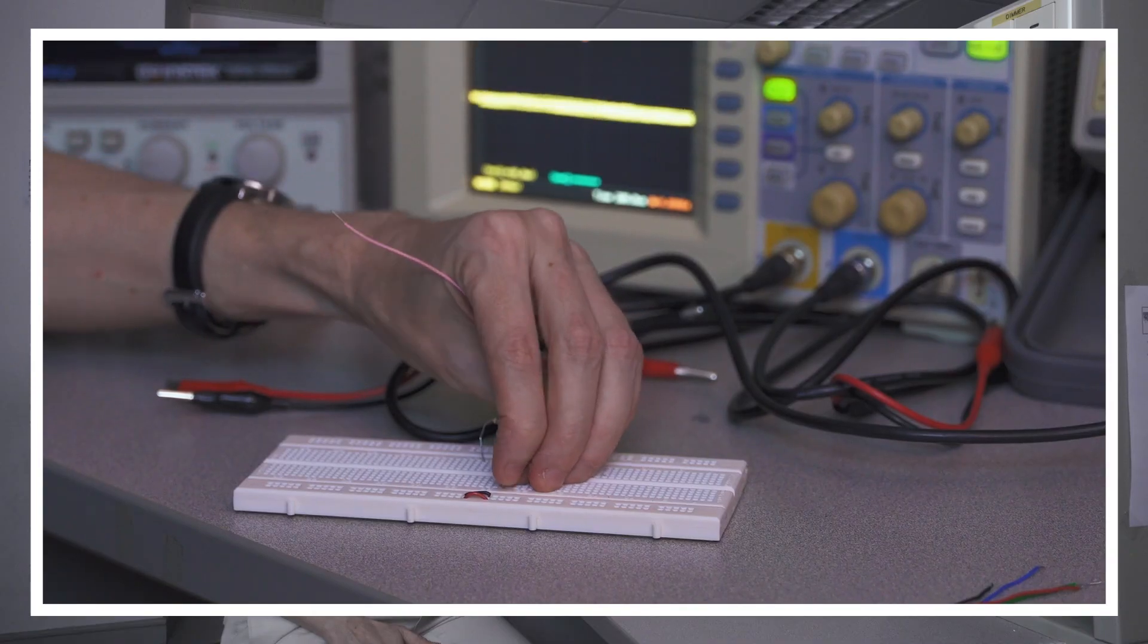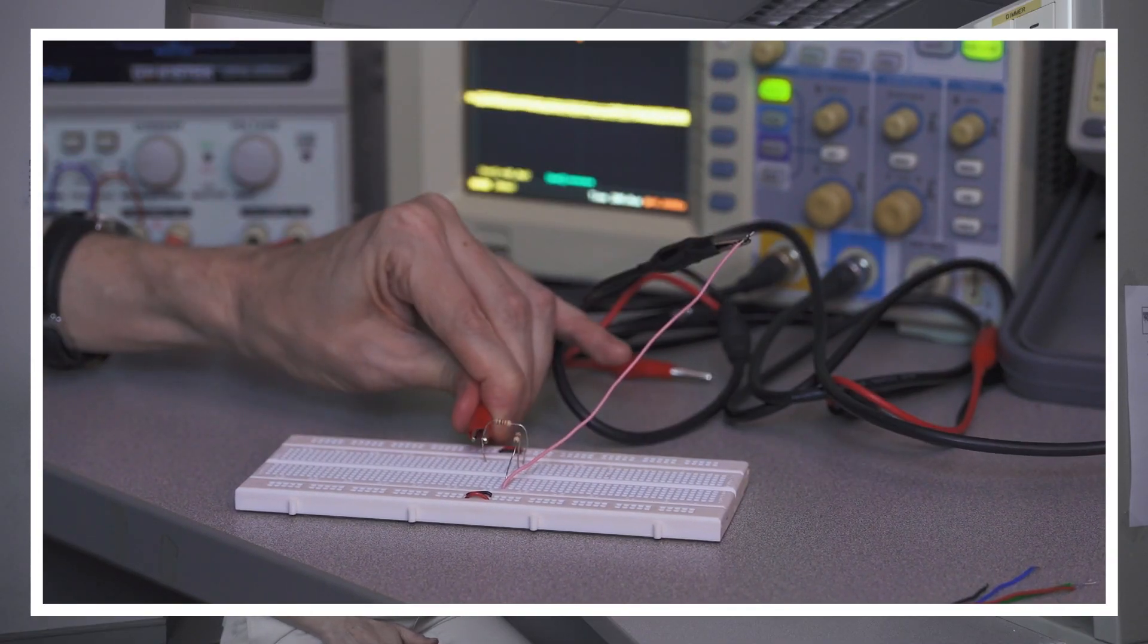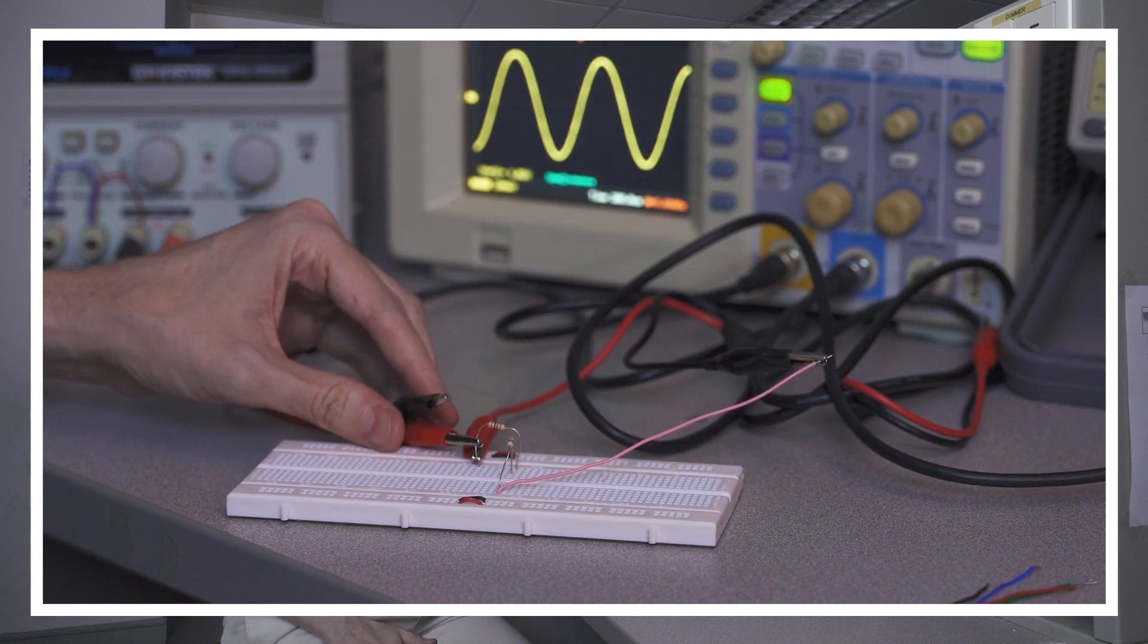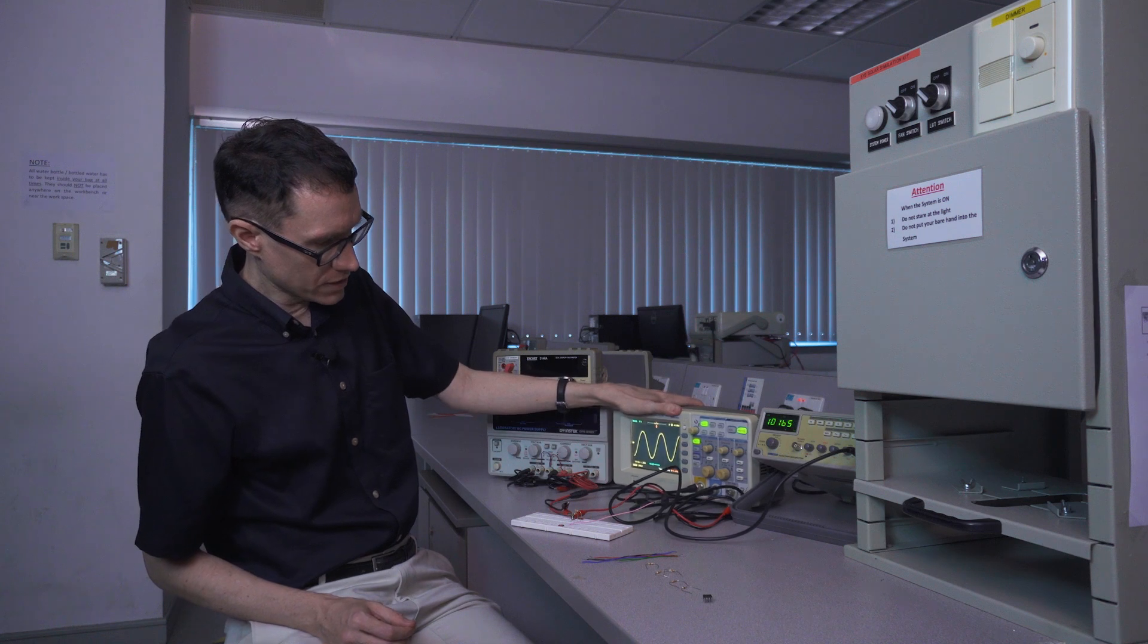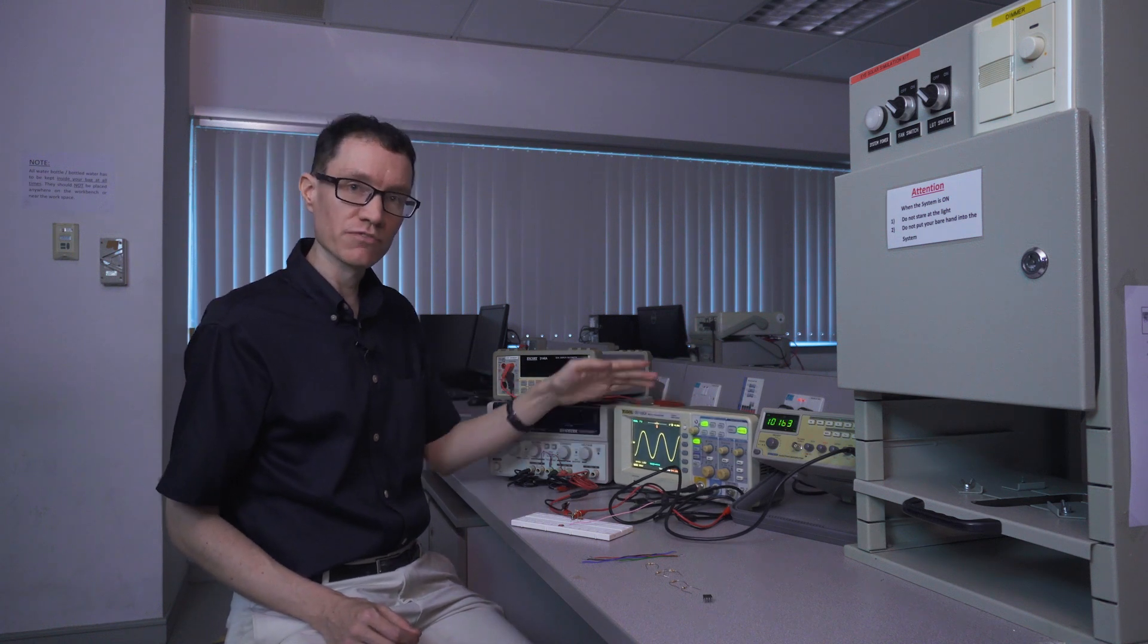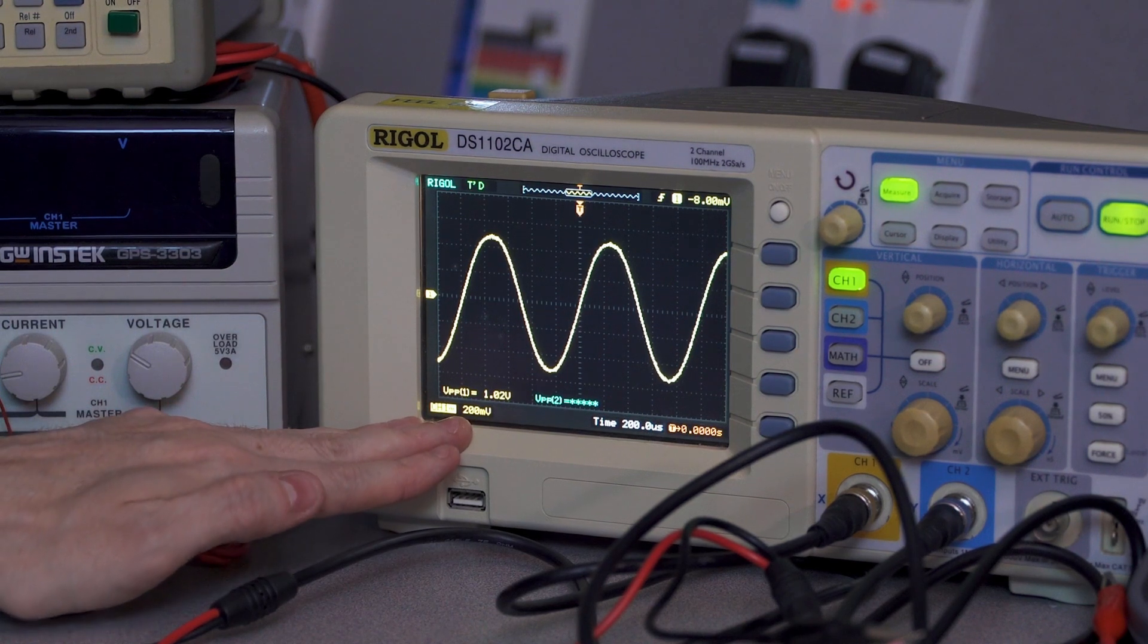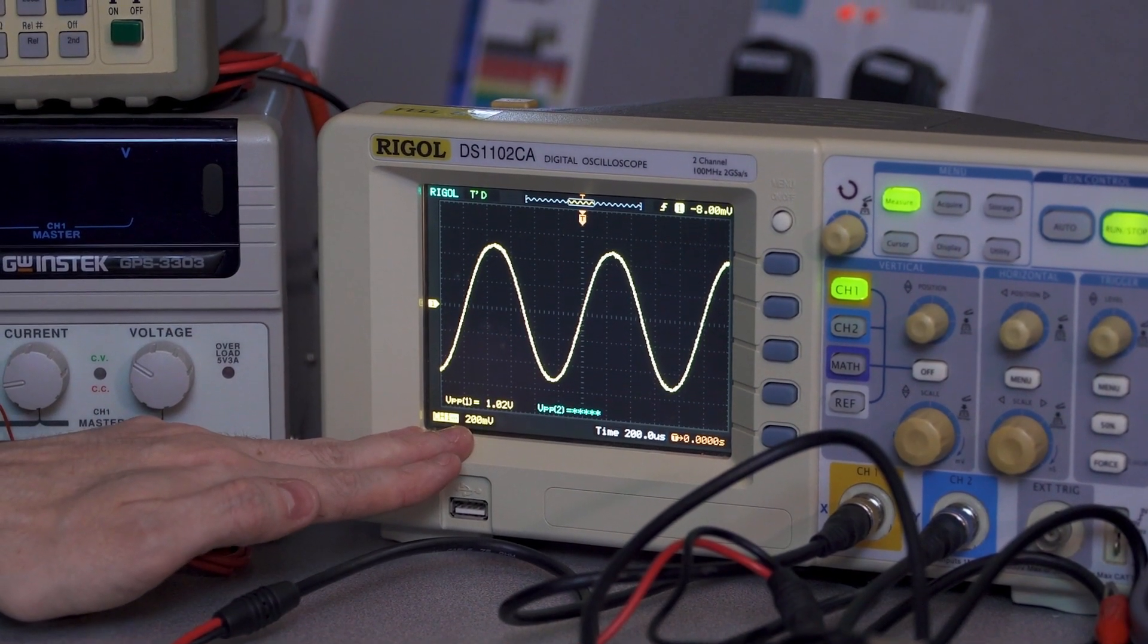We're going to use the function generator to send a sine wave into the circuit and then use the oscilloscope to take a look at the waveform that comes out. We'll be using channel 1 of the oscilloscope to see what the function generator is giving us. I can confirm a 1 volt peak to peak signal entering this circuit.